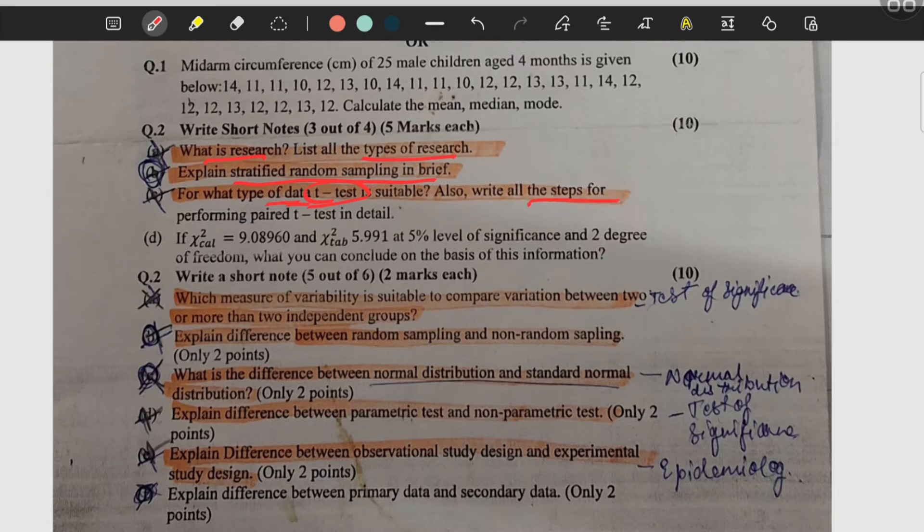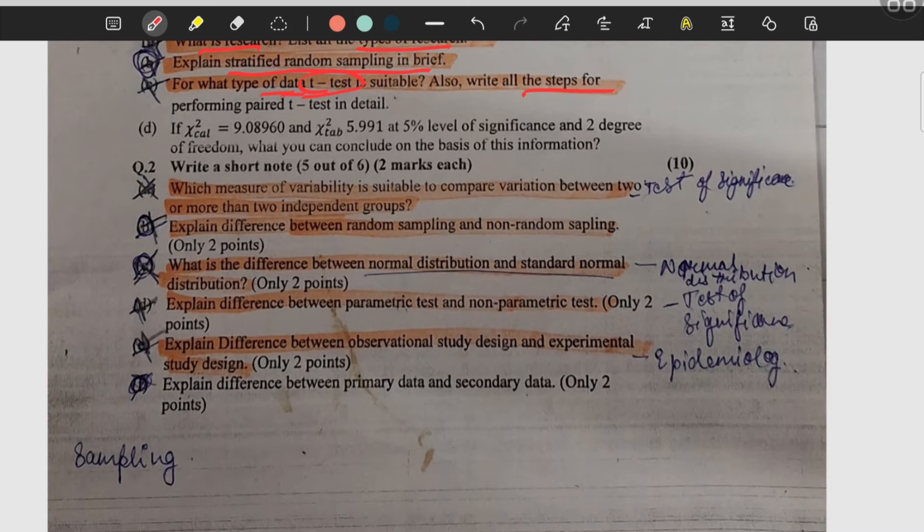What are the measures of variability, how to compare variation between two or more independent groups. Then difference between random sampling and non-random sampling, difference between normal distribution and standard normal distribution.